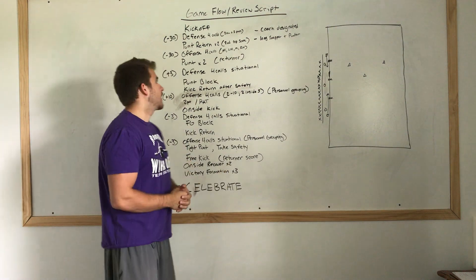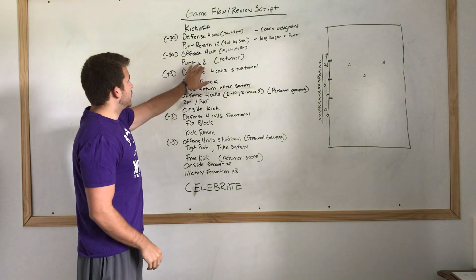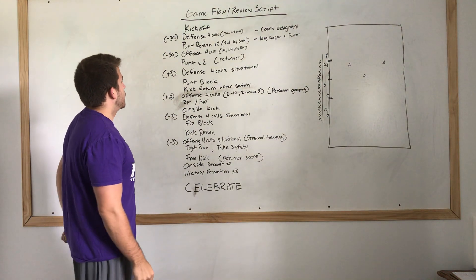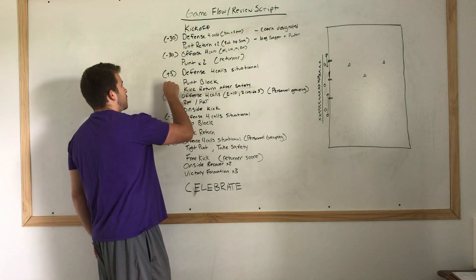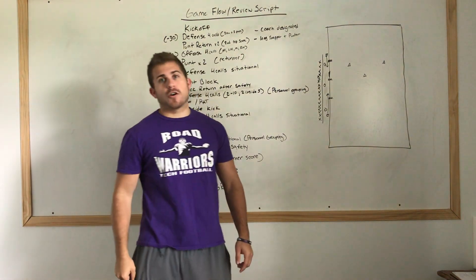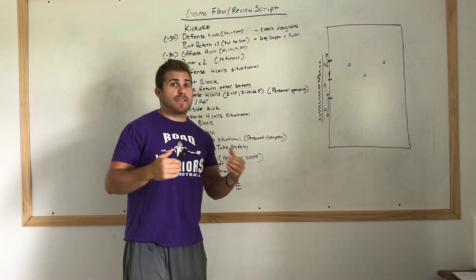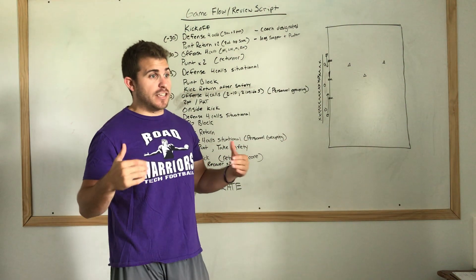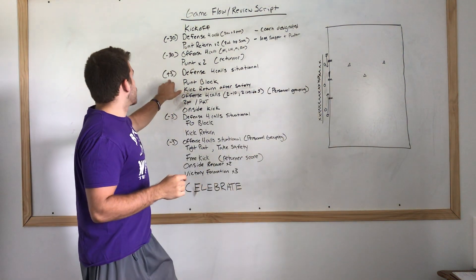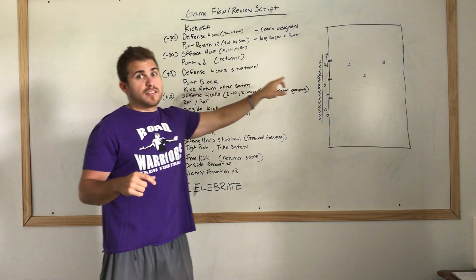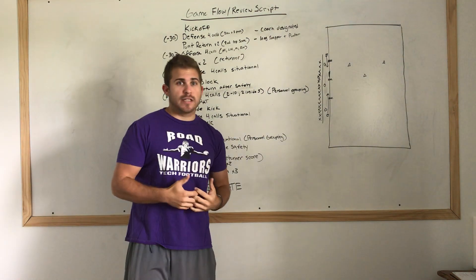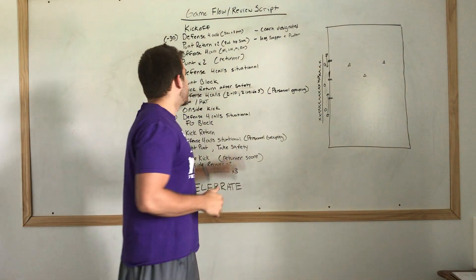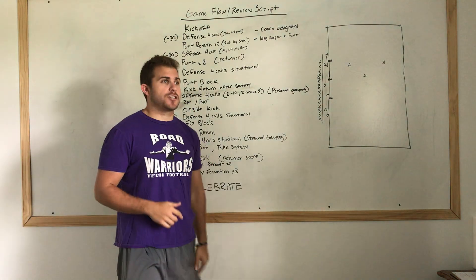Then we'll run our punt team on with a returner back to field — two reps at the punt return. Then the coaches will spot the ball at the three yard line, so this will be our defense with the offense on their heels — the offense is coming out of the end zone. We'll get four calls that are situational. What do we like to do, what defense do we like to be in, when the kids recognize we've got the offense on their heels? Get those four calls in and practice that situation.